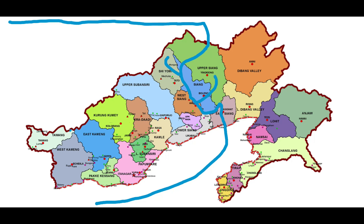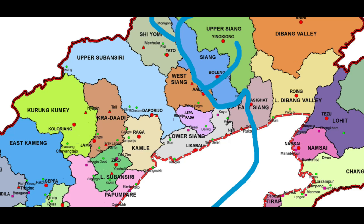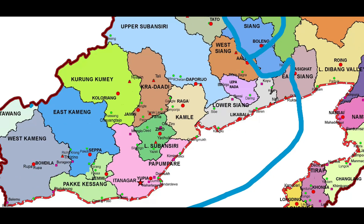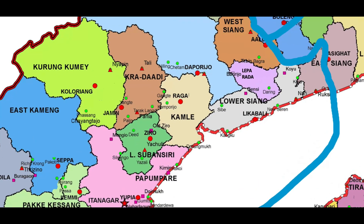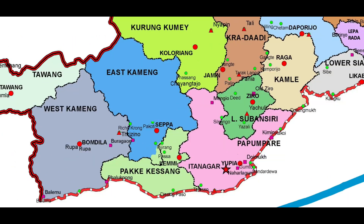Now we are going to talk about the different tributaries that form a part of the Brahmaputra river. As the geographical flow goes from the west to east direction, we are also going to follow the same. The westernmost district of the state of Arunachal Pradesh is the district of Tawang.